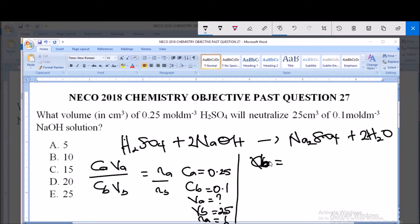From that we can say VA equals CBVB times NA all over CA times NB. We've made VA the subject of the formula by cross multiplying.